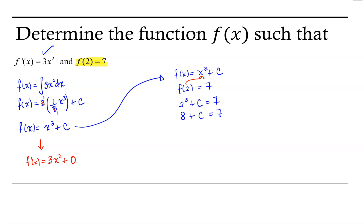So 8 plus c is equal to 7. We need to subtract 8 from both sides of this equation. In subtracting 8, c is equal to 7 minus 8, or negative 1. So this means that we're going to replace the constant c in our original function with negative 1.